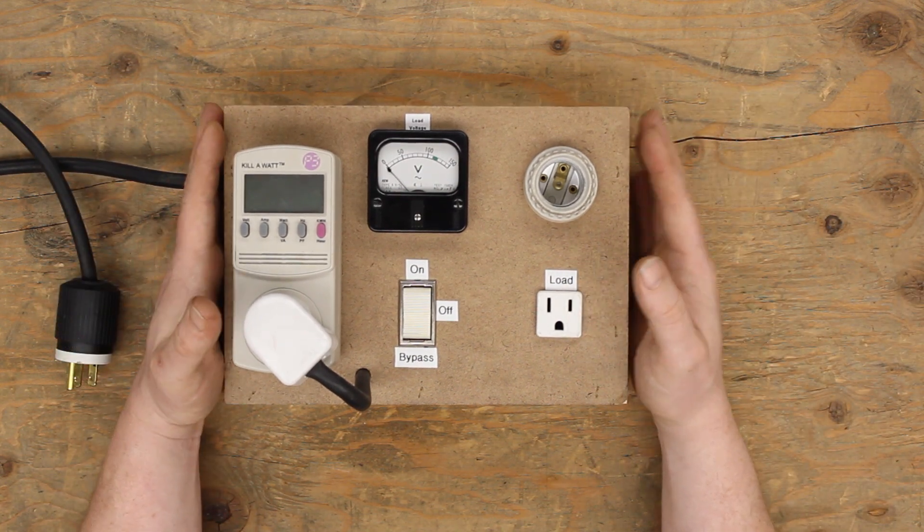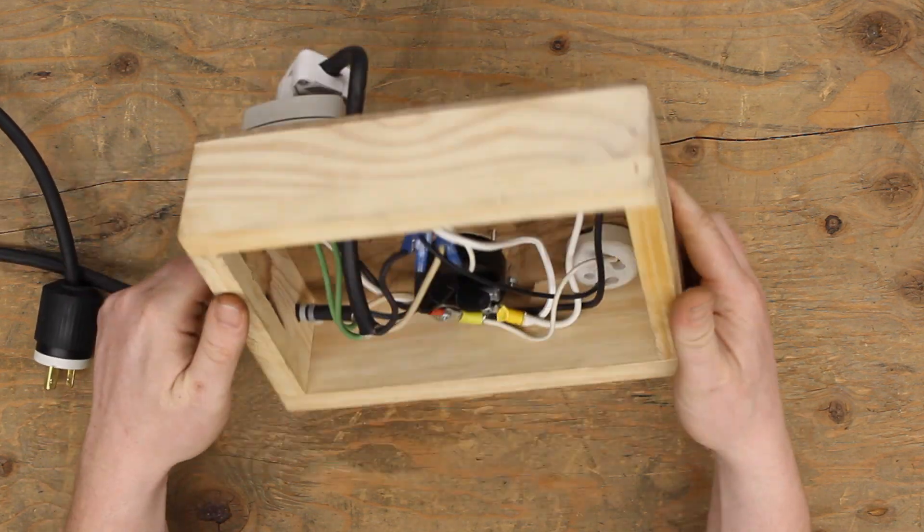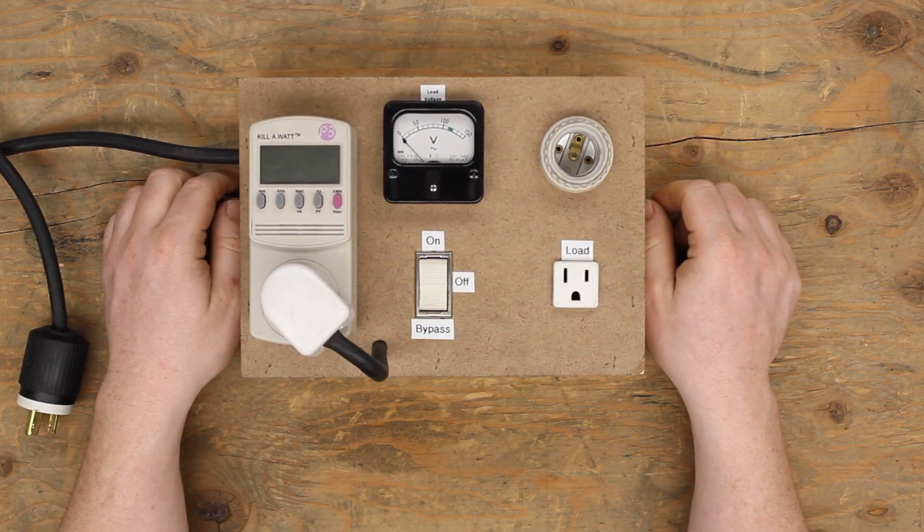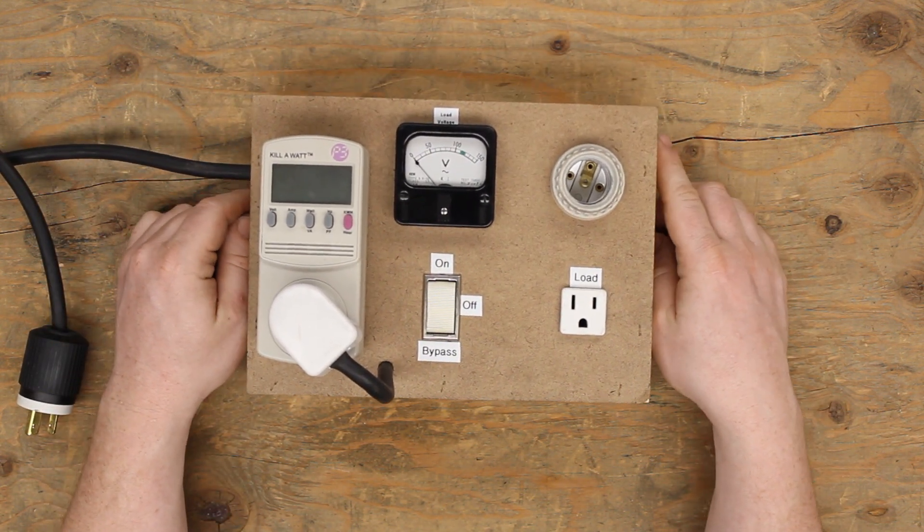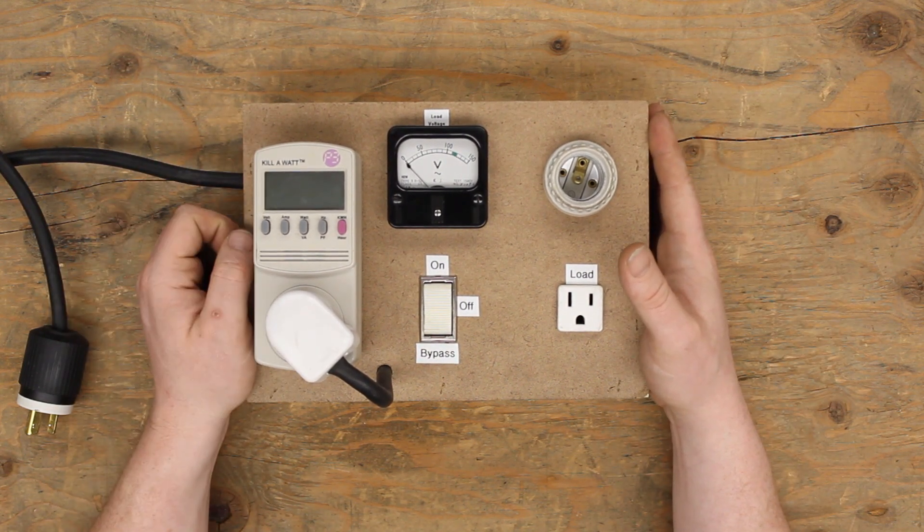So, there you go. Anyway, this is my take on the dim bulb tester. It quite literally is a box using scraps found in the makerspace. But it is quite useful, it's quite powerful, and it's quite effective. And you can build it yourself if you don't mind working with electricity.